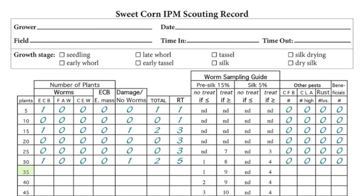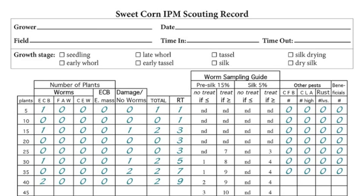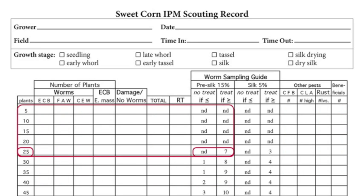The next set of five plants has two damaged plants, bringing the running total to seven — still between one and nine, so we continue to scout. Plants 36 to 40 have two more damaged plants, bringing the running total to nine. Looking at the decision column, we have now reached the 15% threshold that would warrant treatment — we are greater than or equal to nine, so we can stop scouting. You will always have to scout at least five groups of five plants before a decision can be made.